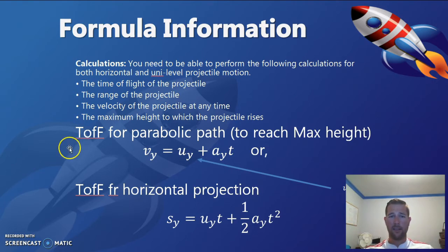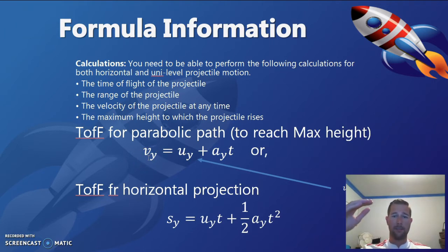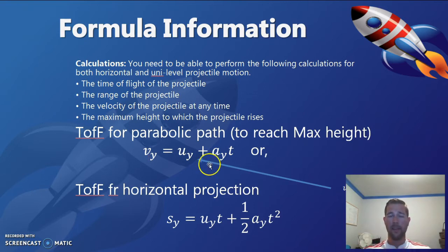For time of flight, we focus on the vertical component of a projectile's velocity. The equation uses the initial and final velocity in the y direction. To reach maximum height, the final velocity is zero — at maximum height the projectile's vertical velocity is zero just before it comes back down, due to gravity always acting towards Earth and slowing any projectile thrust upward. The time to reach maximum height is the first part of the projectile's flight, with the second part being its return to Earth.